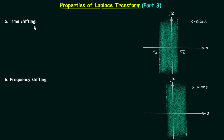The fifth property is the time shifting property. I will only state the property without proving it, because the proof is similar to what we saw in the Fourier transform chapter. Let's understand the time shifting property of the Laplace transform. We take a time domain signal f(t) whose Laplace transform is F(s), and the region of convergence is equal to R.